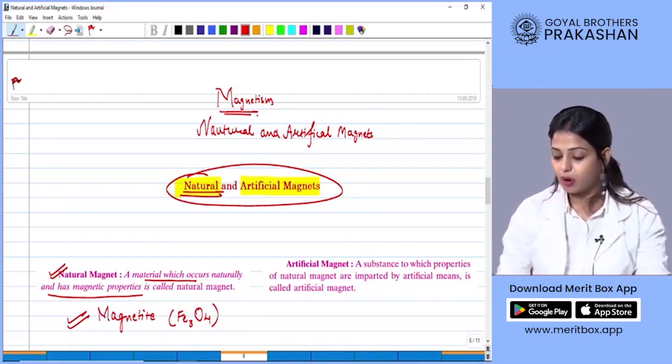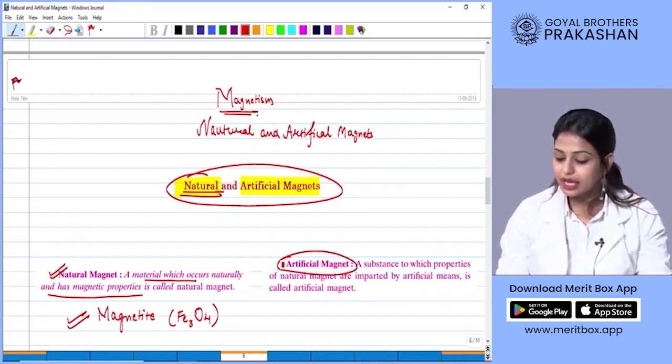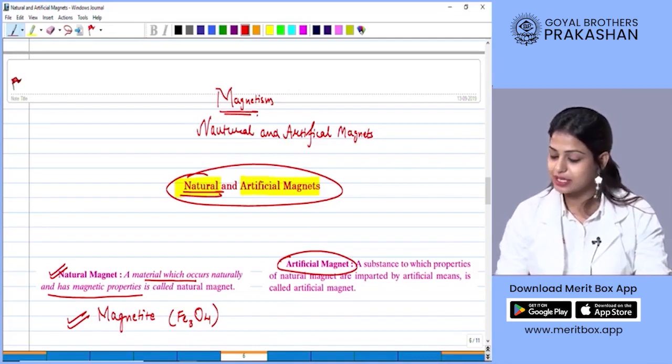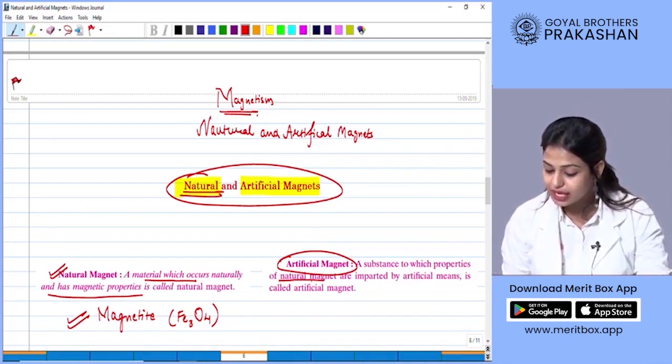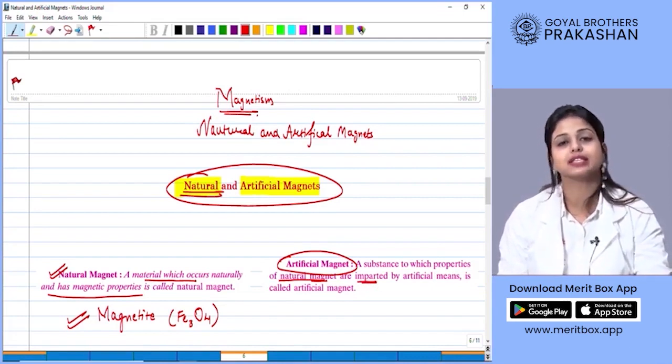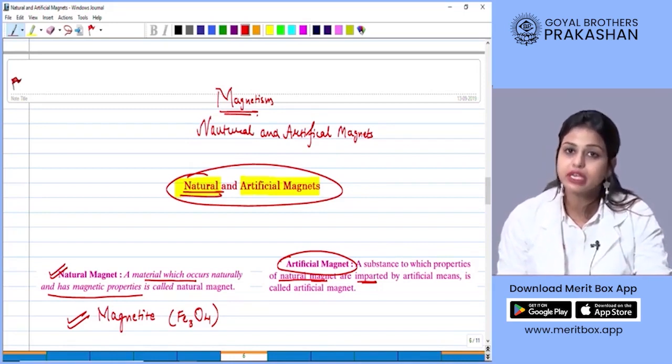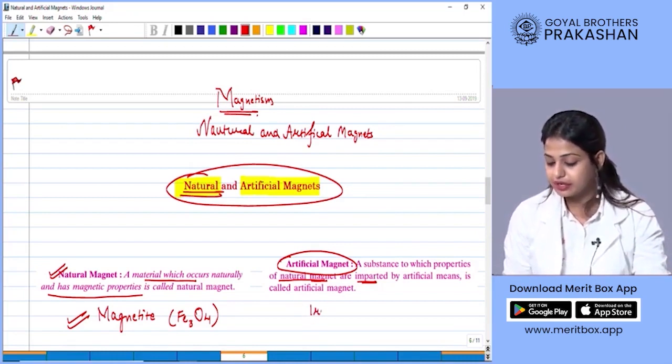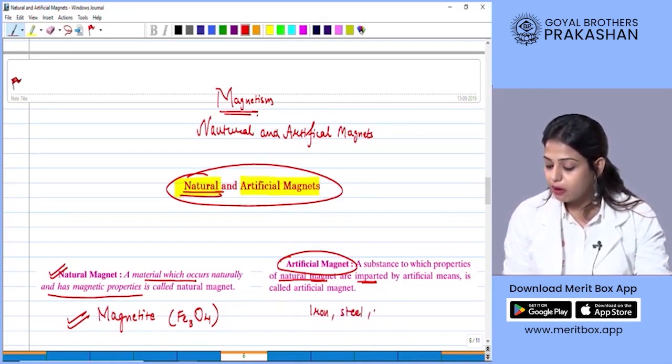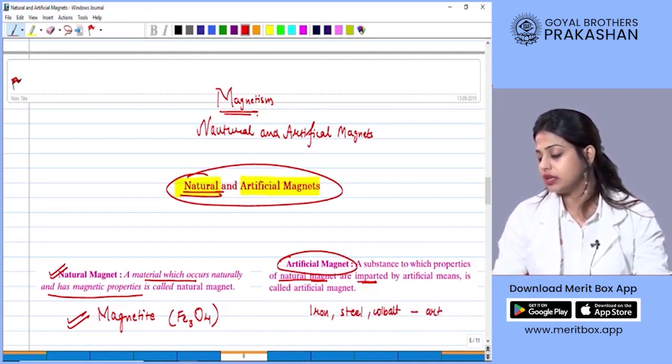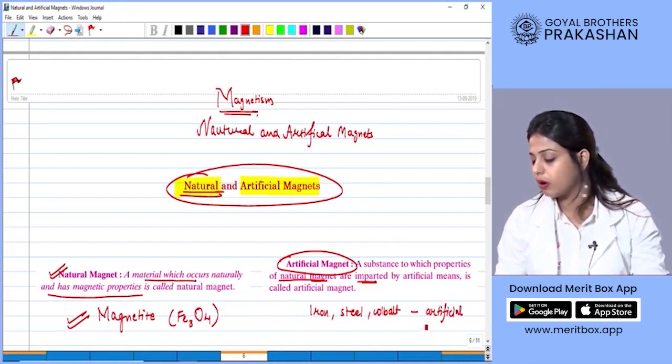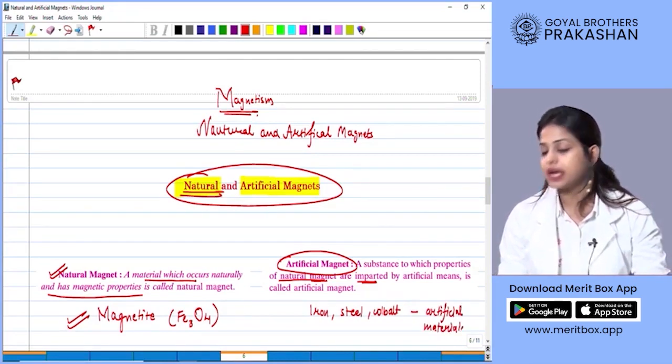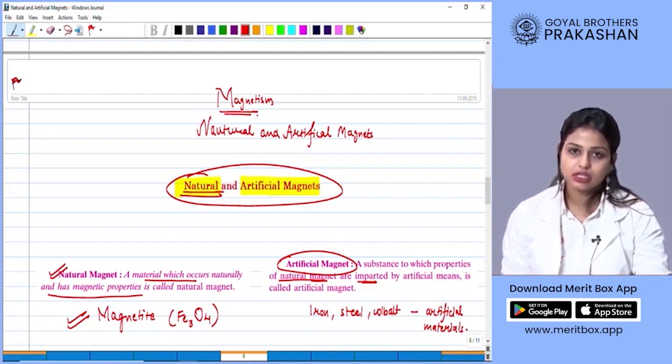The other example of magnets are artificial magnets. An artificial magnet is defined as a substance to which properties of natural magnet are imparted. That means these kinds of magnets are made by humans and the properties of magnetism are imparted in such materials. Such materials such as iron, steel, cobalt, all of these can form artificial magnets. That means they are capable of imparting the properties of a magnet.